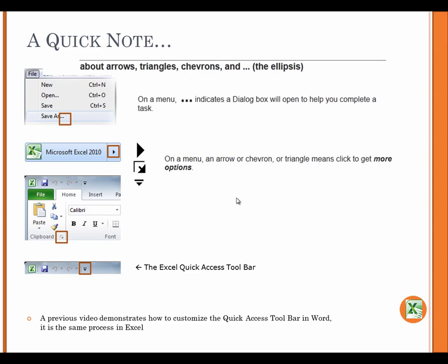On a menu, an ellipsis indicates a dialog box will open to help you complete a task.